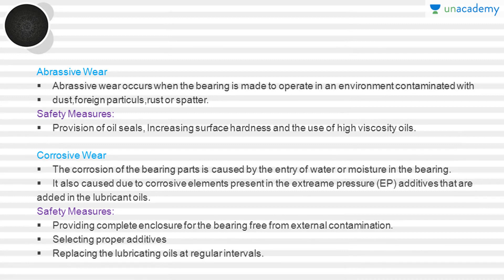Abrasive wear occurs when the bearing operates in an environment contaminated with dust, foreign particles, and rust. The safety measures for abrasive wear include the provision of oil seals, increasing the surface hardness, and the use of high viscosity oils. High viscosity oils leave little space for contaminants to penetrate, thereby eliminating abrasive wear in those bearings.